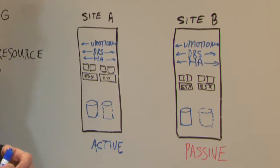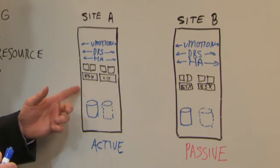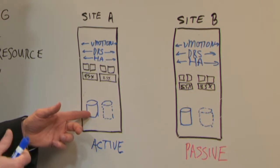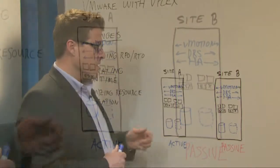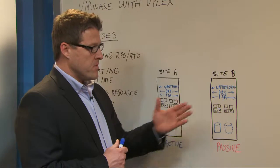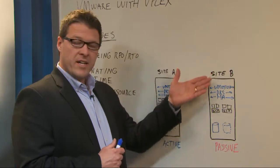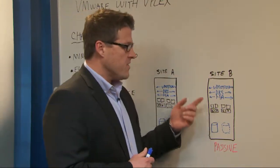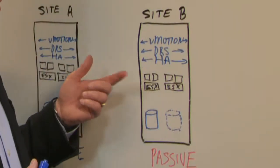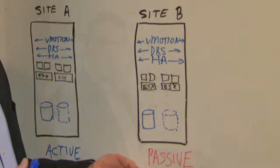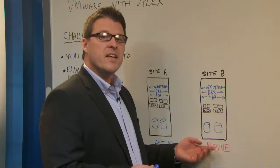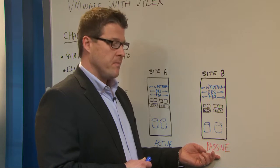In a typical VMware environment, one data store would live on one physical disk on one storage array. At the second site, Site B, an identical setup. At Site B the same capabilities exist, but the resources there are passive. We're only running at this site if there's a failure at the primary site.